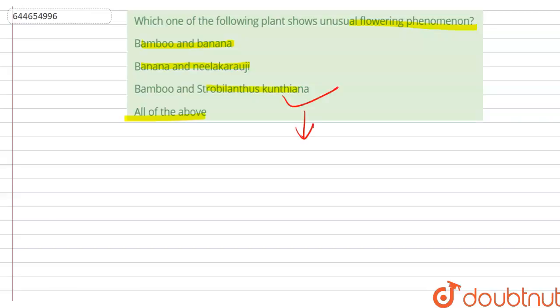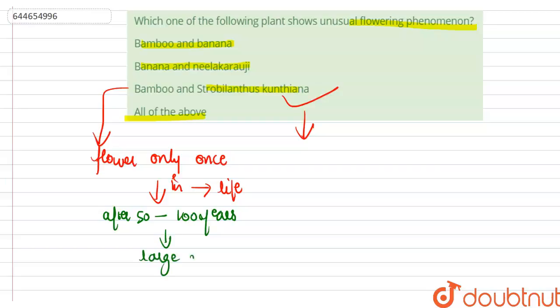The unique feature with respect to flowering and fruiting in bamboo species is that they flower only once in their lifetime - only once in their entire lifetime, after 50 to 100 years. They produce large numbers of fruits and die.